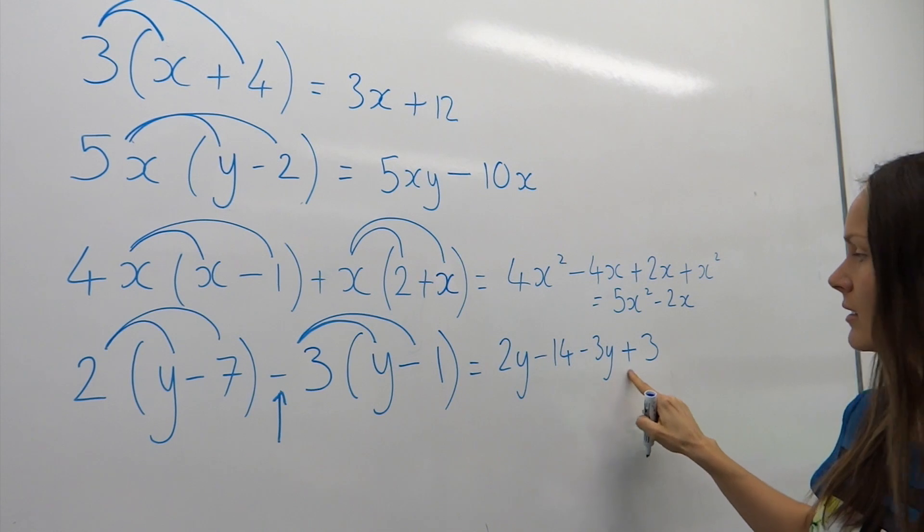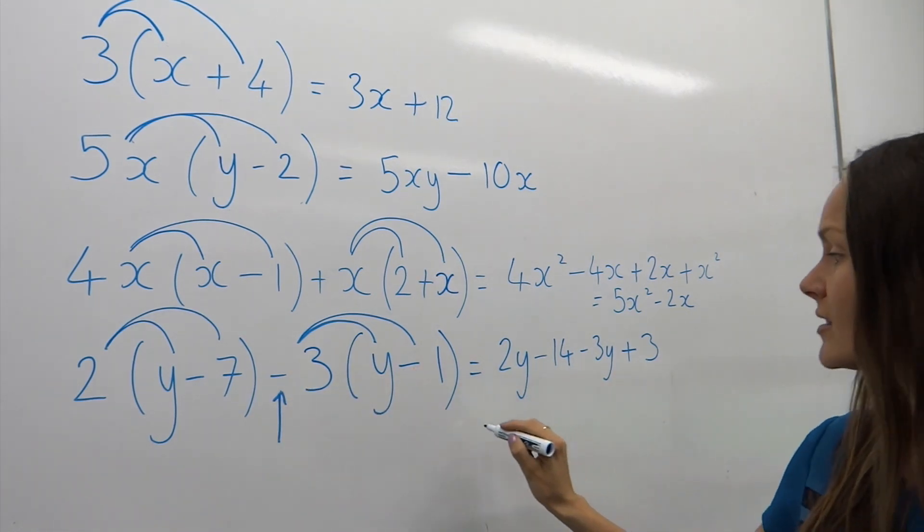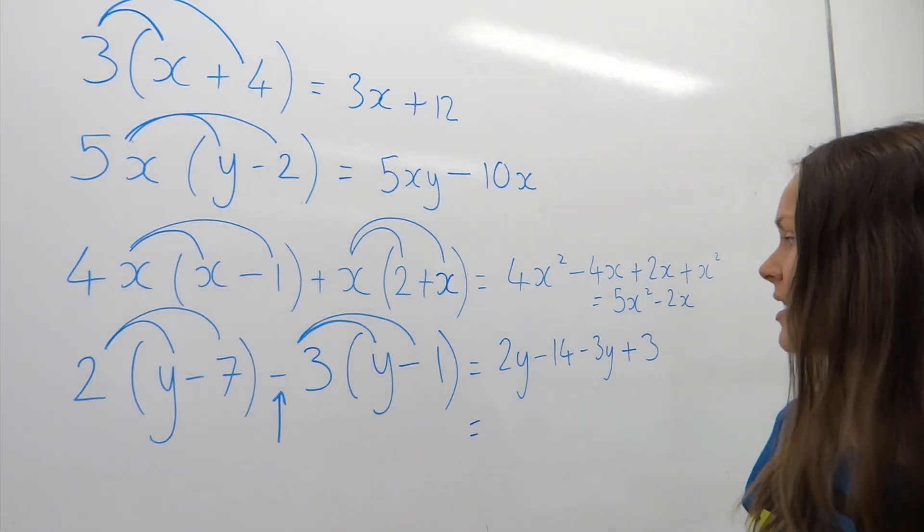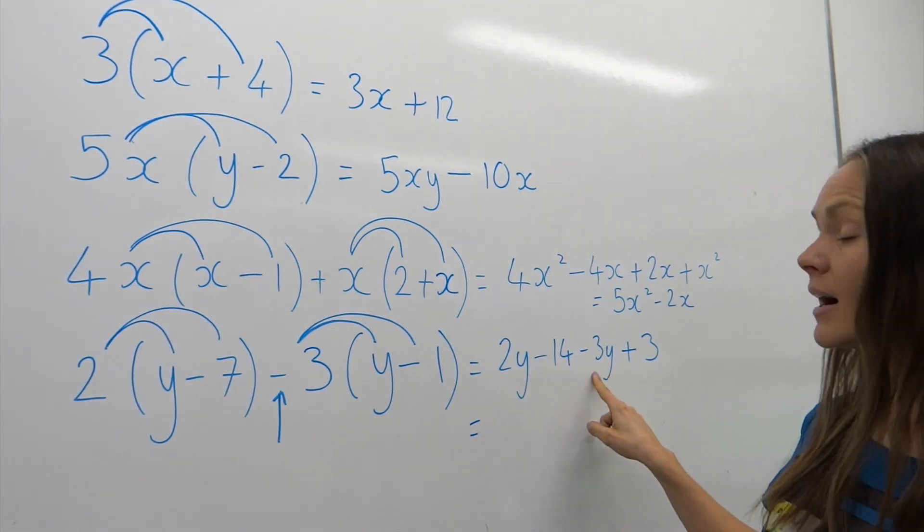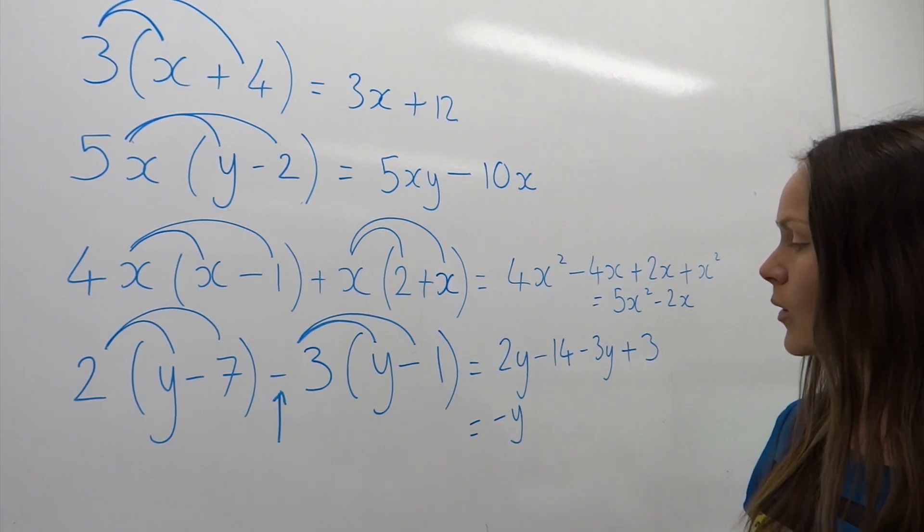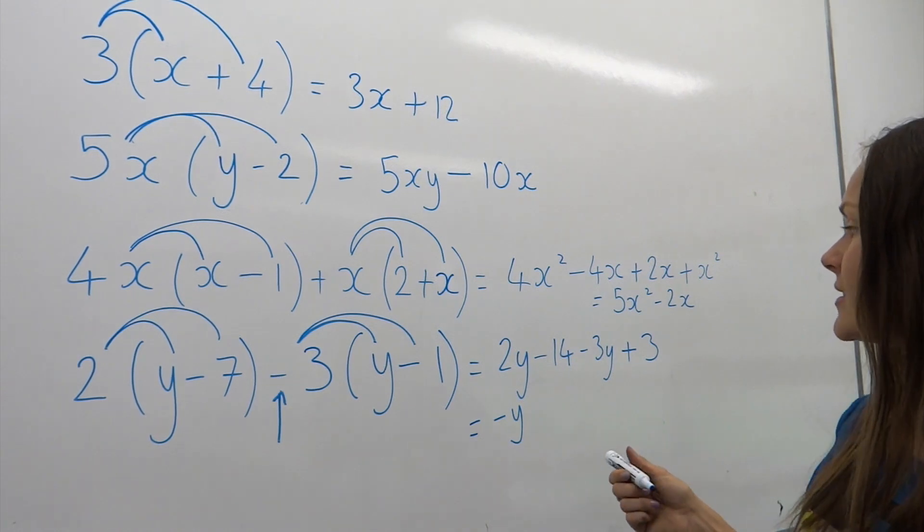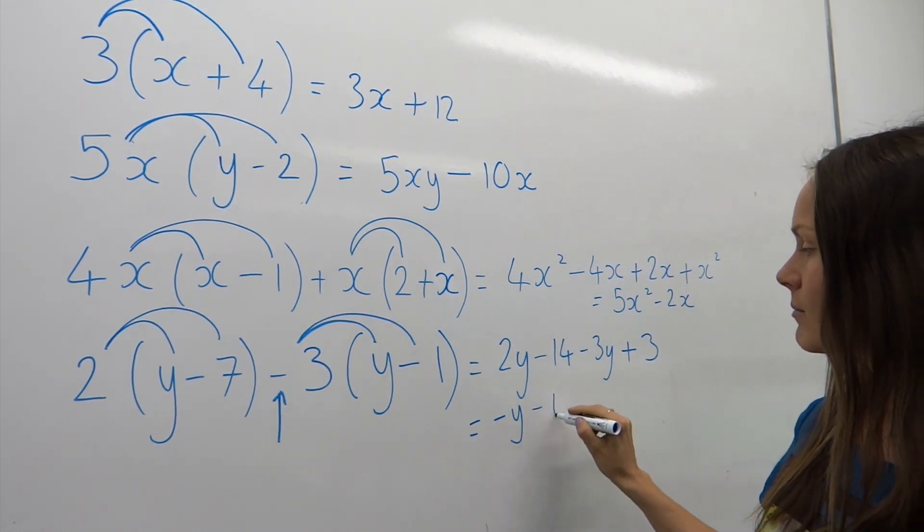Now the last step, the simplifying. If you want to get full marks, then you need to simplify. I'm going to add these y terms together. Here I've got 2y, and then I'm minusing 3y, so that leaves me with minus 1y. We can just write this as minus y. And the very last step: minus 14 plus 3 gives me minus 11.